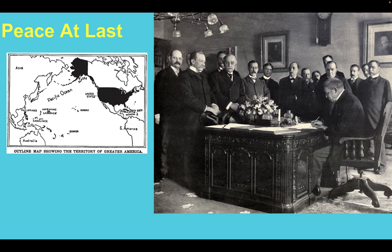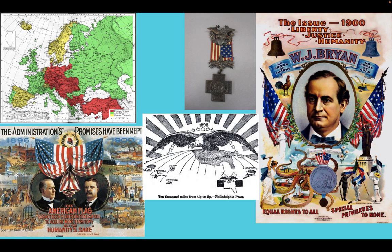Peace at last. With Spain suffering heavy losses and the fall of Cuba to the United States, the Treaty of Paris was signed, giving America control of the Spanish Philippines, the Carolinas, Guam, Puerto Rico, and also Cuba. We had also at this point annexed Hawaii. Some argue that the shellacking Spain took in the war is what caused them to remain neutral in World War I. This also created the Spanish-American War Veterans Society, which later evolved into the Veterans of Foreign Wars.